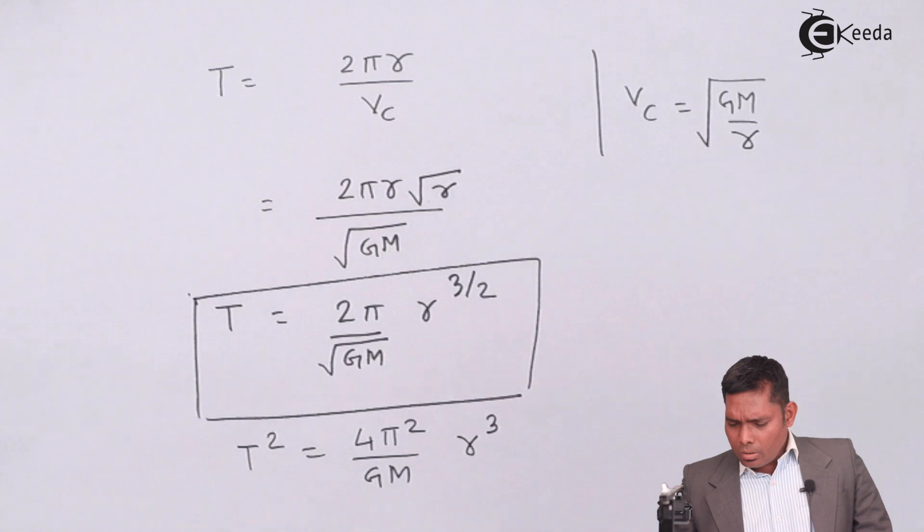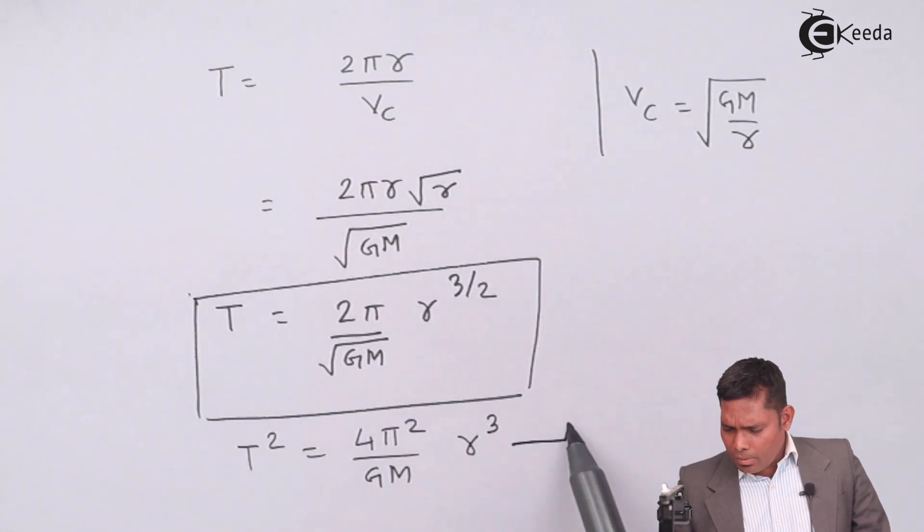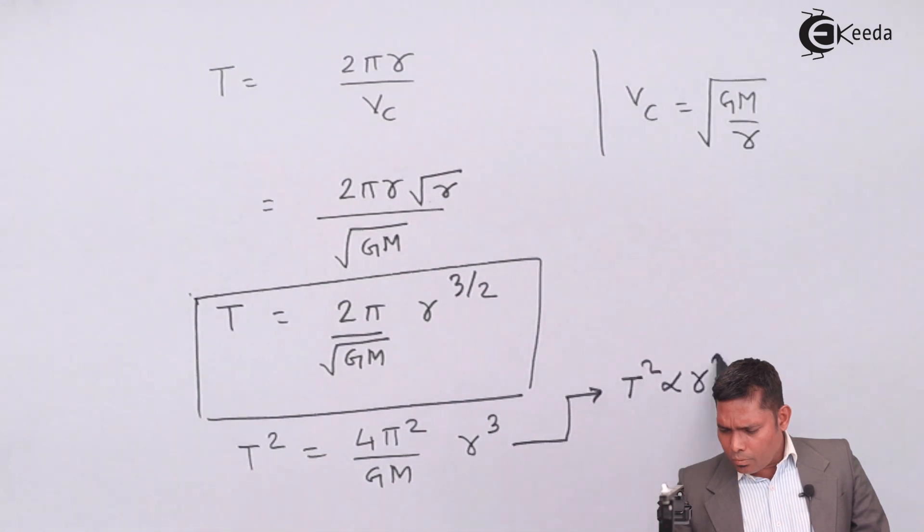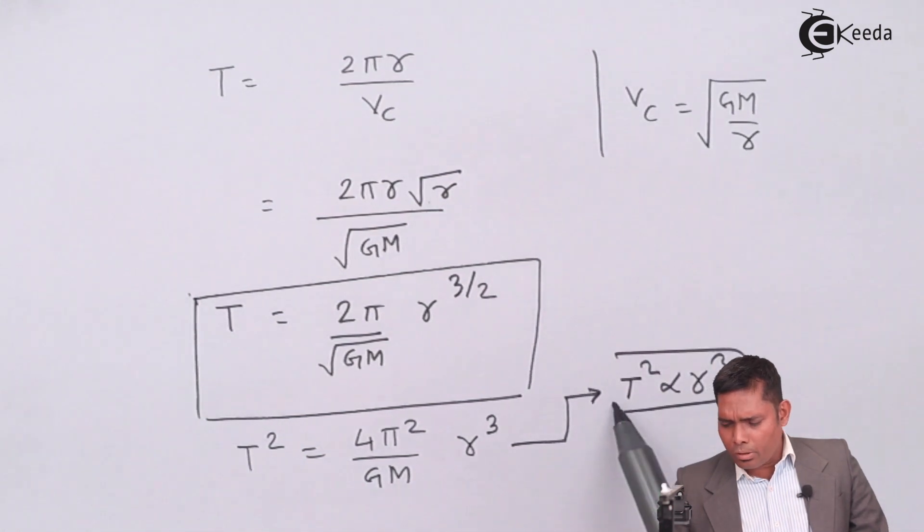Now this is the expression from here. I will just have a relation that T square is proportional to cube of the radius. This relation is also important for numericals.